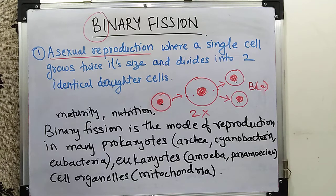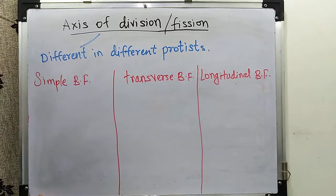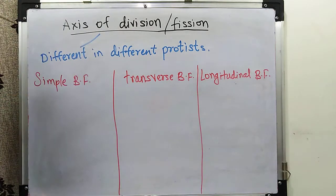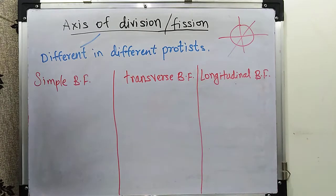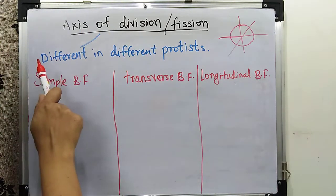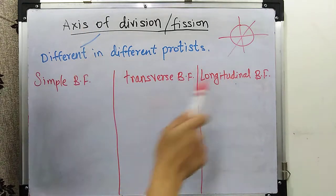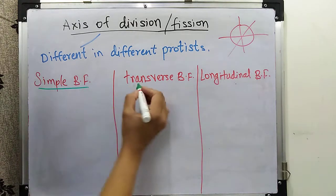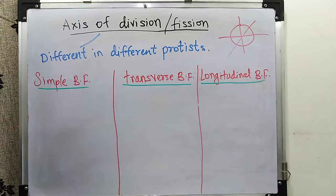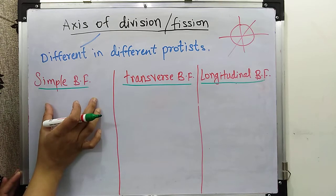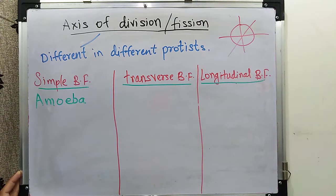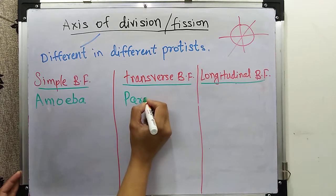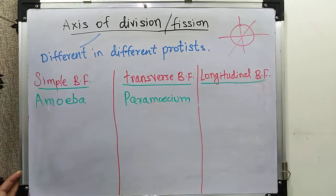Now let's look at how binary fission happens. The axis of division differs in different organisms and different protists. We can see three types: simple binary fission, transverse binary fission, and longitudinal binary fission. Simple binary fission occurs in amoeba-like protists because amoeba has no fixed shape. Transverse binary fission occurs in paramecium and longitudinal binary fission occurs in euglena.